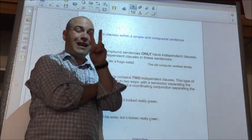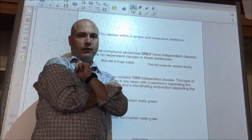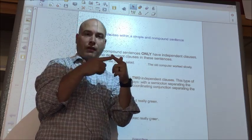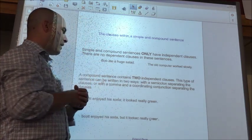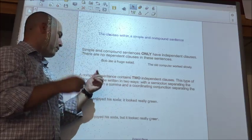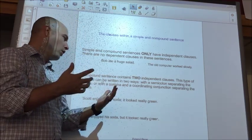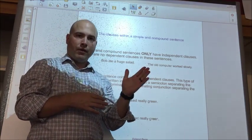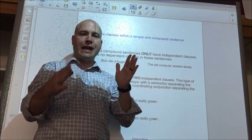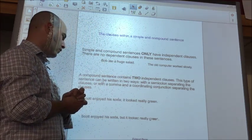A compound sentence contains two independent clauses. Two simple sentences put together. This type of sentence can be written in two ways. You can use a semicolon that separates the clauses or you can write with a comma followed by what's called a coordinating conjunction that separates the clauses.